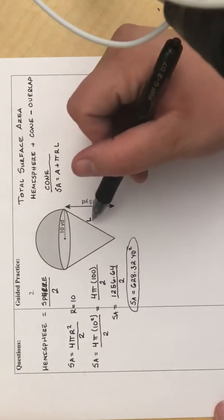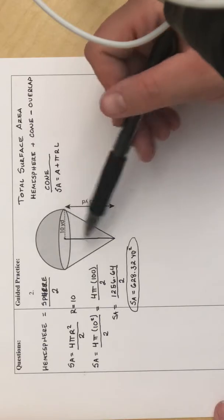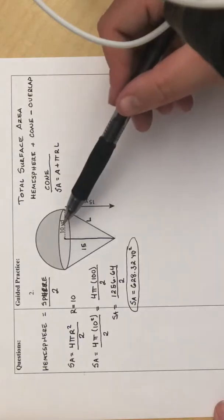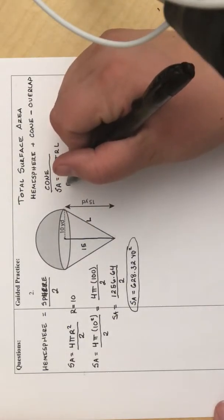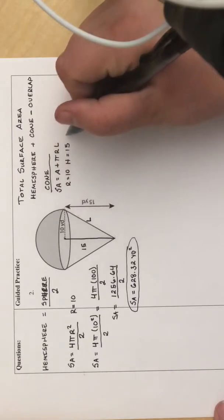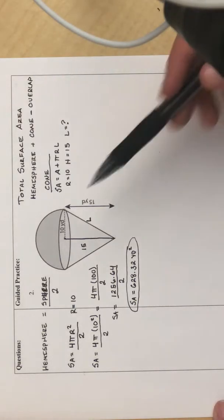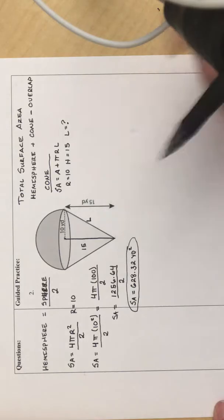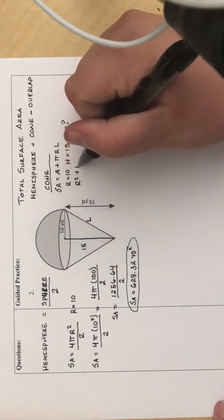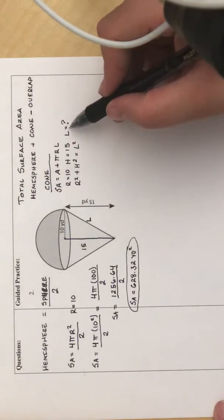So what we need to do is find L by using what we have. I know that from the circle to the point is 15 yards, and I know that the radius is 10. So r equals 10, h equals 15. We don't know what L is. So what I'm going to do is, since this makes a triangle, I can use the Pythagorean theorem, which is r squared plus h squared equals L squared, and plug in my values, and I can find L.